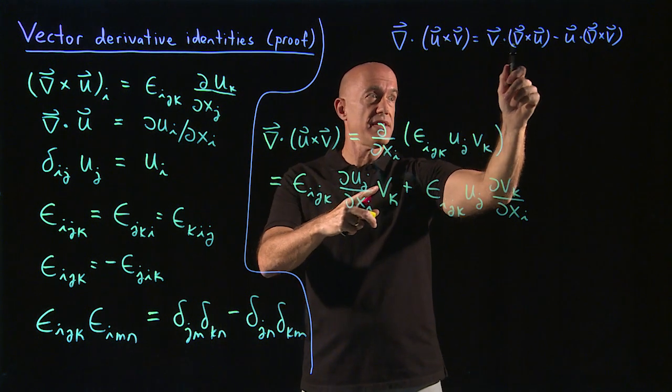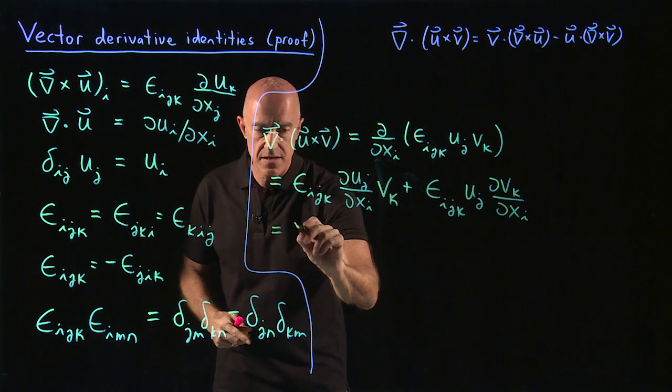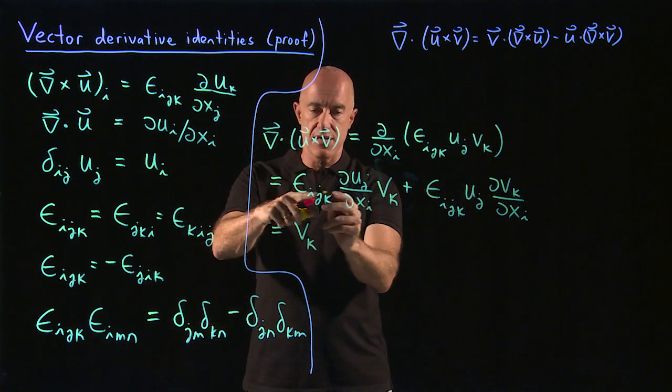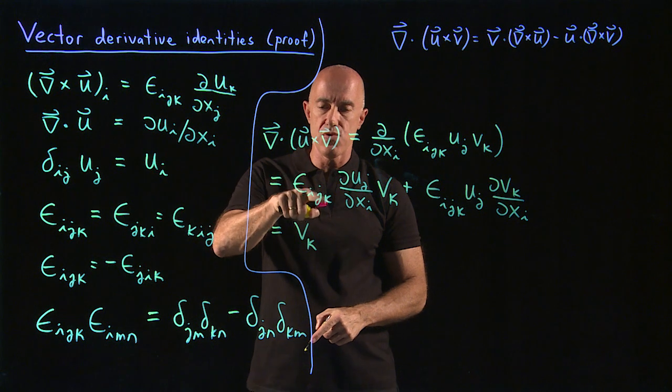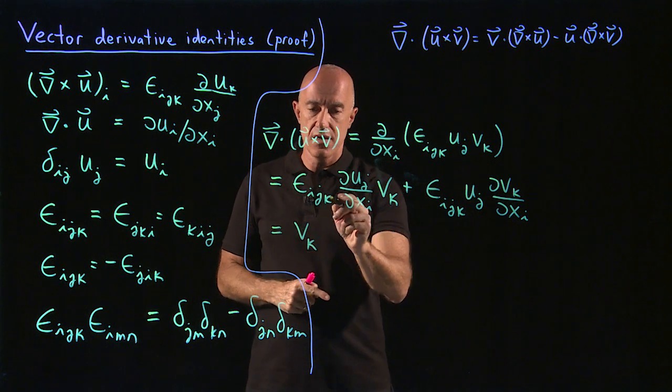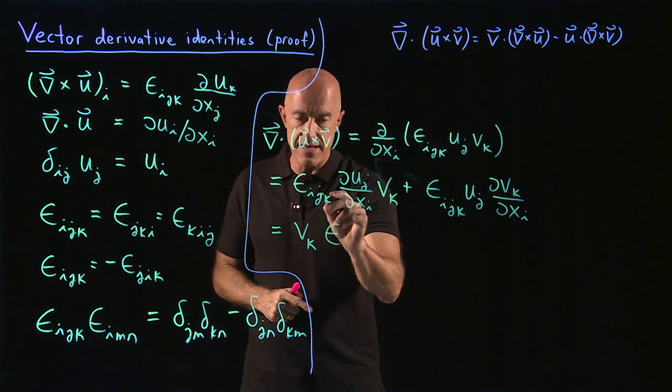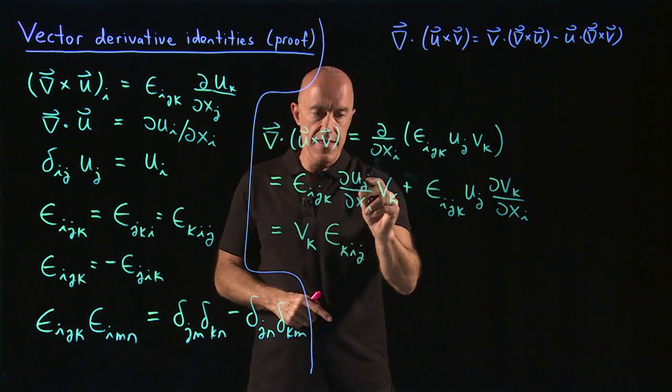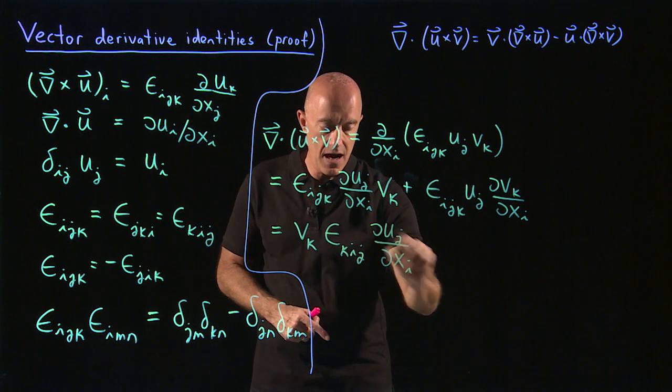Now, we're trying to get this as v dot something and u dot something. So I want to pull out the v. So v_k. And then I'm going to be dotting that into a curl. So I want this k index in epsilon to move to the first slot. So that v will be dotted into that curl. So I can use i,j,k and move those things cyclically. So I can write that as epsilon_kij. And then we have du_j/dx_i.